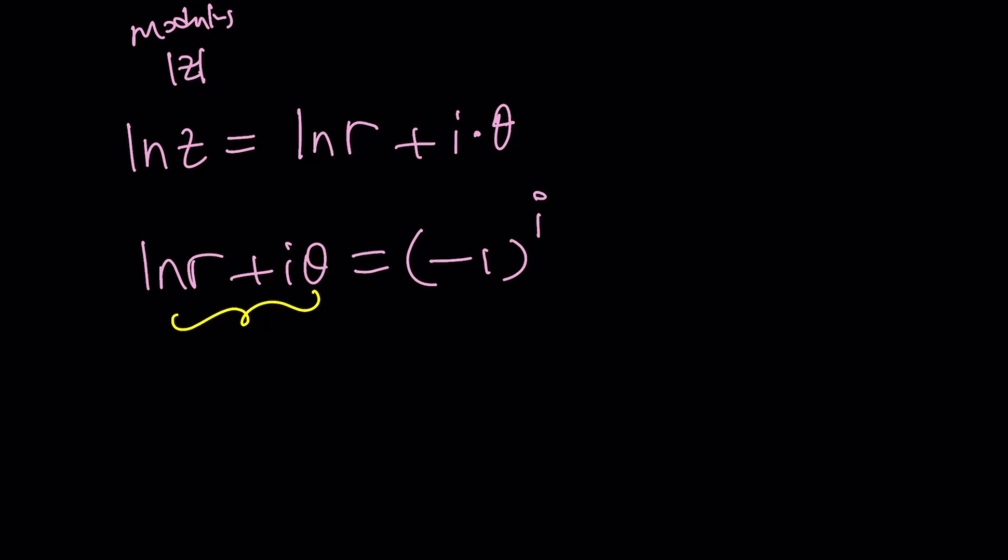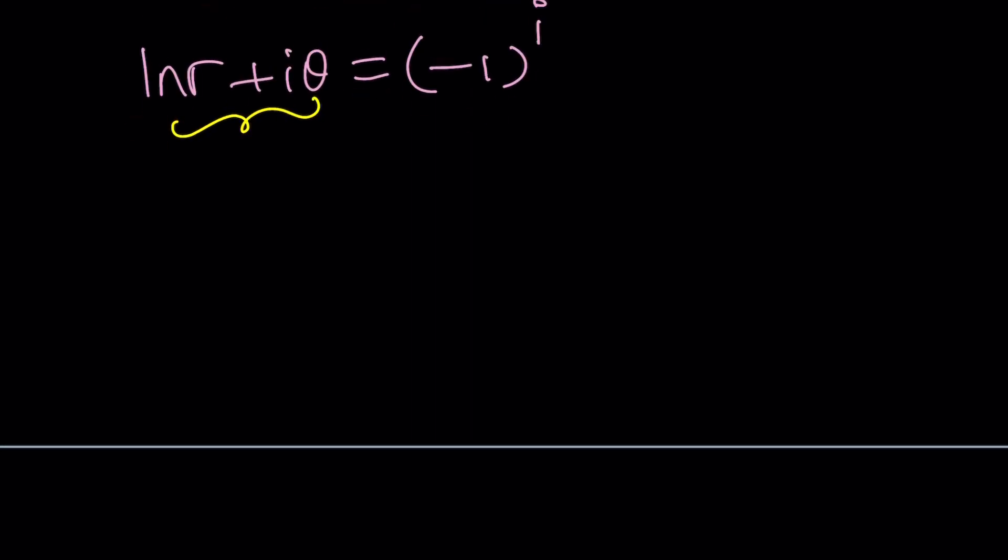But the right hand side is not in that form. Makes sense? So we kind of have to turn it to that form or some other form. So let's work with negative one to the power i. In order to be able to do that, we're going to write negative one as a complex number. In other words, we're going to complexify negative one.